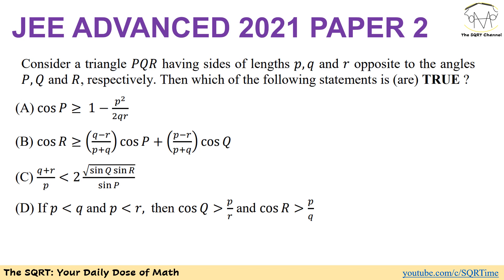Hello everyone, welcome to the SQRT channel. In this video we are going to take another problem from JEE Advanced 2021 Paper 2. This problem is a geometry problem — we have a triangle PQR with sides p, q, and r opposite to the angles P, Q, and R. We need to find which of the following cases are true. Multiple cases may be correct, and we need to verify each case separately, which makes the problem a little bit challenging.